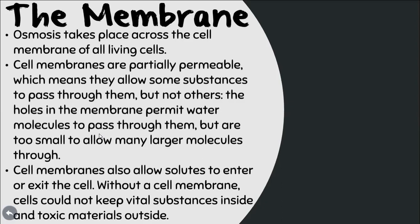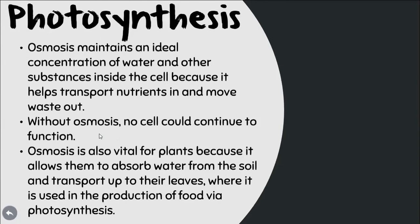If a substance is detected to be toxic, it will not make it into the cell. When we talk about photosynthesis, osmosis maintains an ideal concentration of water and other substances inside the cell because it helps transport nutrients in and move waste out. When the cell is done processing nutrients, it transports the waste out of the cell. Without osmosis, no cell could continue to function.